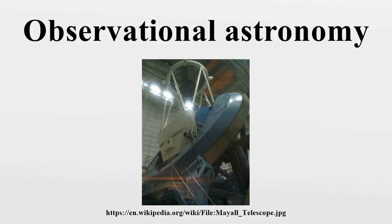Optical and radio astronomy can be performed with ground-based observatories. Because the atmosphere is relatively transparent at the wavelengths being detected, observatories are usually located at high altitude so as to minimize absorption and distortion caused by the Earth's atmosphere. Some wavelengths of infrared light are heavily absorbed by water vapor, so many infrared observatories are located in dry places at high altitude, or in space.